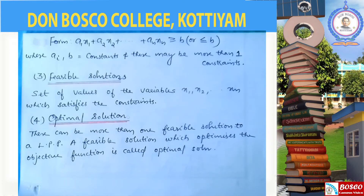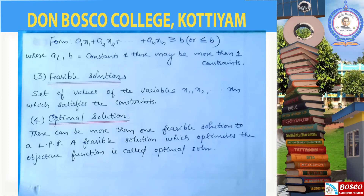To optimize the objective function means to either maximize it or minimize it. For example, maximize profit or minimize cost. The optimal solution is the feasible solution that optimizes the objective function. The optimal solution is unique.